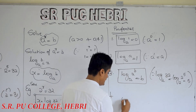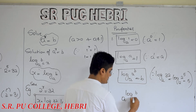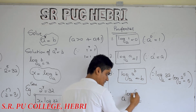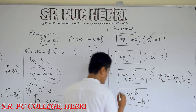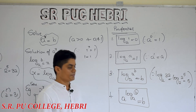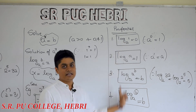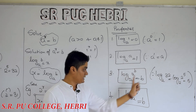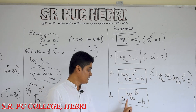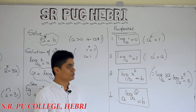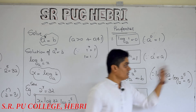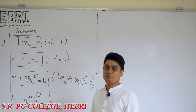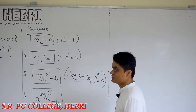Suppose it is like this: a power log of b to the base a — then also, since the base and the base are the same, the answer is b. This is a very useful property for all three subjects. So remember these four standard properties: log of 1 to the base a is equal to 0; log of a to the base a is equal to 1; log of a power b to the base a is equal to b; a power log of b to the base a is also equal to b.